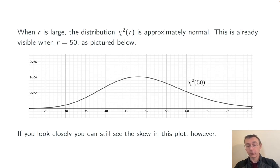By the central limit theorem, when the number of degrees of freedom gets large, the distribution chi-squared of r is going to become approximately normal. And you can see this in this sketch, which shows r equals 50. If you squint at it a little bit, you will see still a bit of that rightward skew, which makes sense.